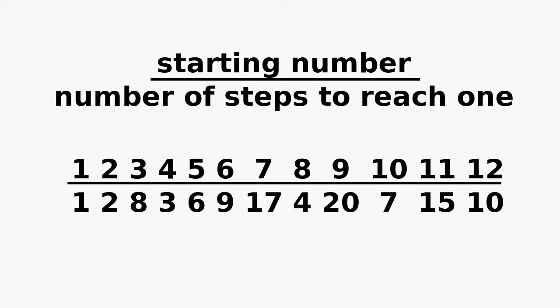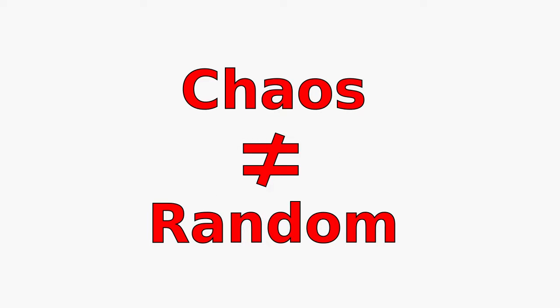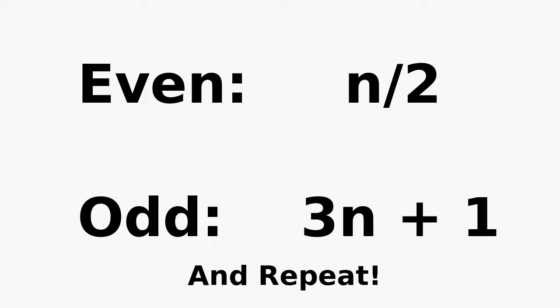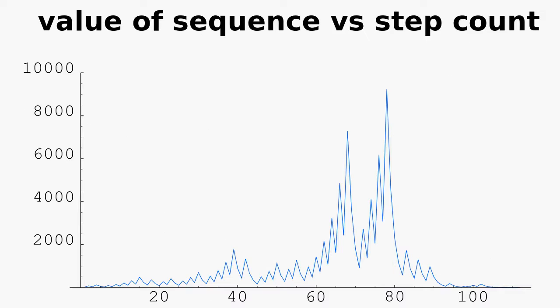You can't predict how the sequence is going to turn out based on the previous numbers. It is chaotic, but it is not random, since it is based on a defined rule. If you start at the same number, you will always get the same sequence. Chaos is when the past predicts the future, but an approximate past does not predict an approximate future. Starting at 27 gives the sequence 111 steps long, reaching 9,232 before falling back down.